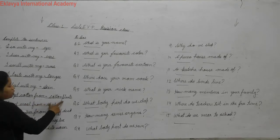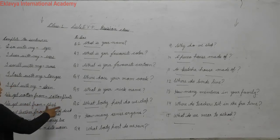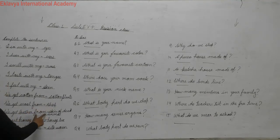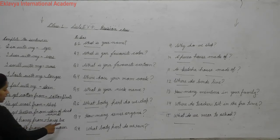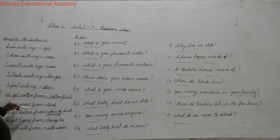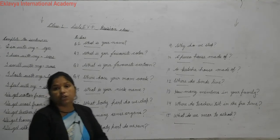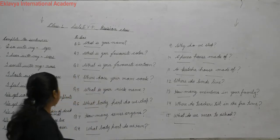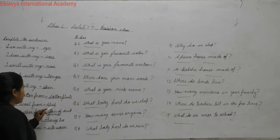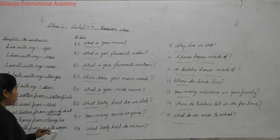We get cotton from cotton plants. We get wool from sheep — sheep hair is used to make winter clothes like your sweater and cap. We get leather from skin of dead animals. We get honey from honey bee. And we get silk from silk worm.